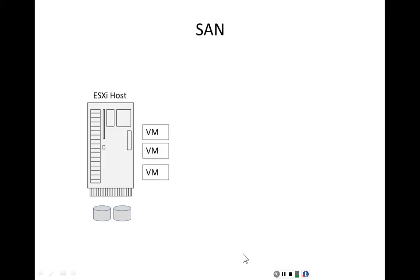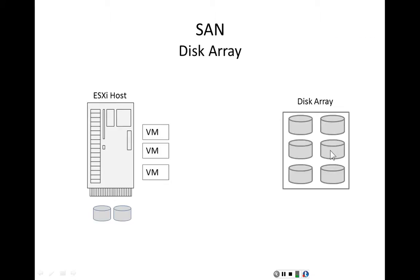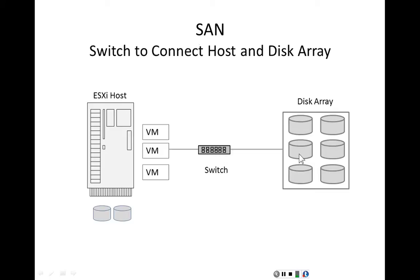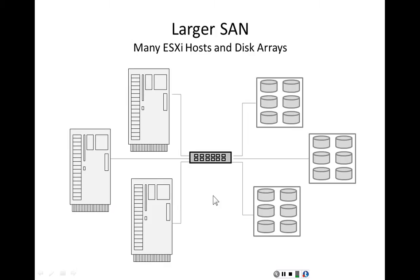If we want to use a storage area network, we get an external disk array — sometimes called a RAID array. The disk array is connected to the ESXi host by way of a switch, and the virtual machines save data to the hard disks on the disk array. This is a simple storage area network. A more complex example would have many ESXi hosts and many different disk arrays.